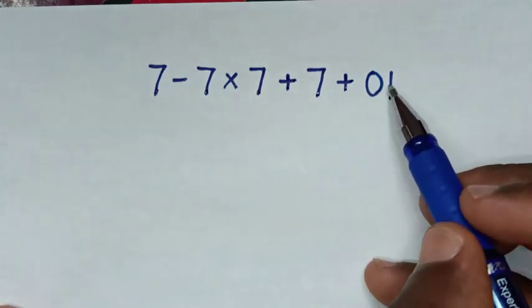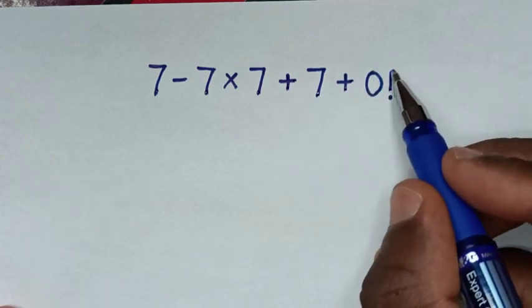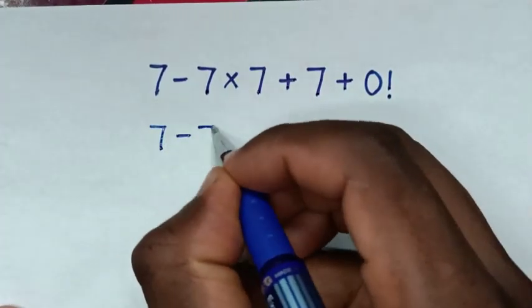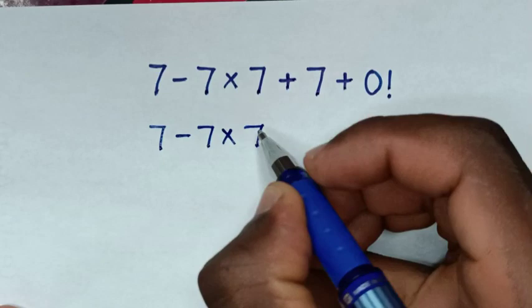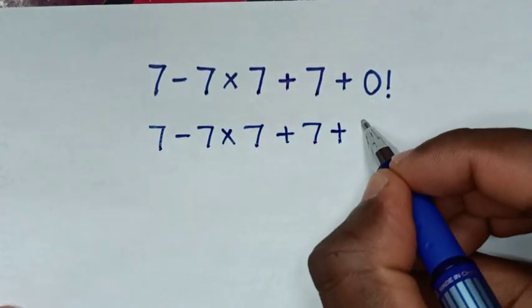Now in the first step we change this 0 factorial into numbers. 0 factorial is 1, so it will be 7 minus 7 times 7 plus 7 plus 1.